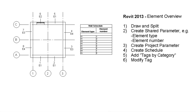Hello and welcome. In this session we'll take a look at how to create an element overview in Revit 2013. I'll show you how to draw and split wall elements, how to add information like element type and element number on the different wall elements, and see how it can be written out in schedules.